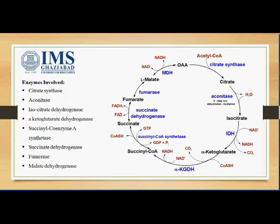In the next step, succinate is converted into fumarate and 2 hydrogen ions are transferred to FAD. Water is then added and fumarate is converted into malate. The last step of the cycle is the regeneration of oxaloacetate by oxidizing malate, producing another molecule of NADH.